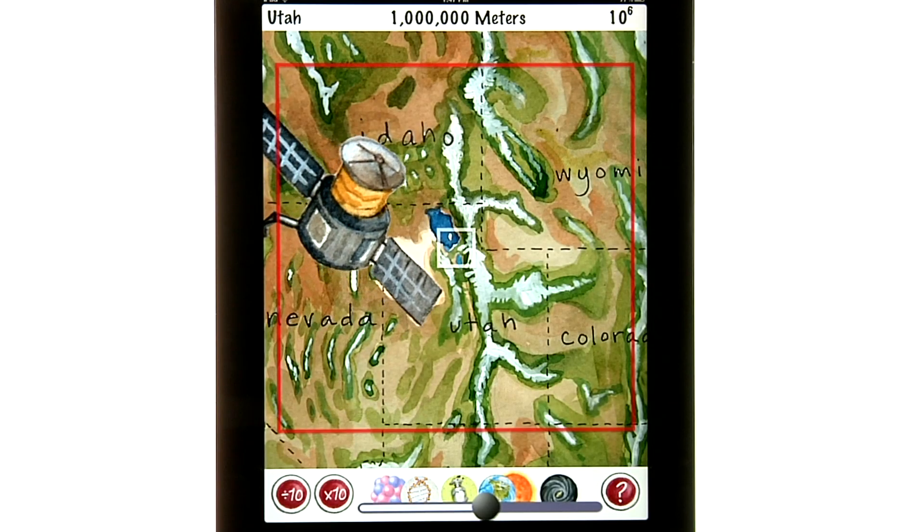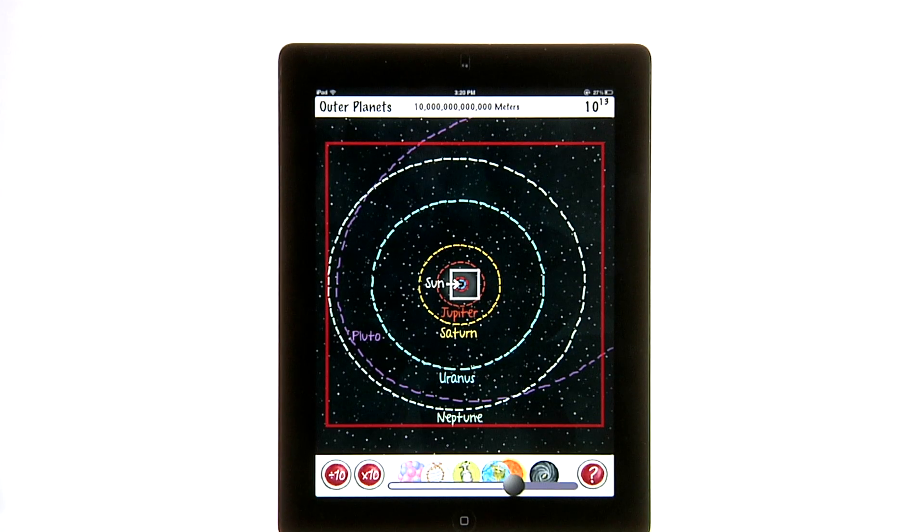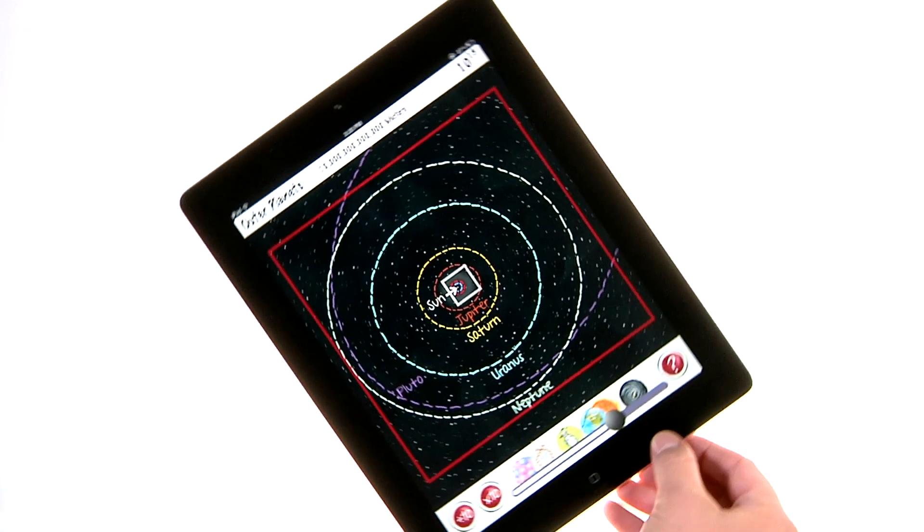Now we are one million meters above Tickbait. Now we can see all the planets in our solar system. If you want more details on what you're looking at,